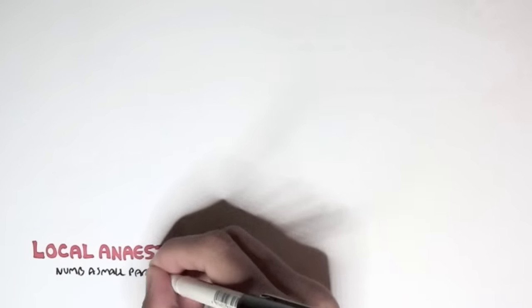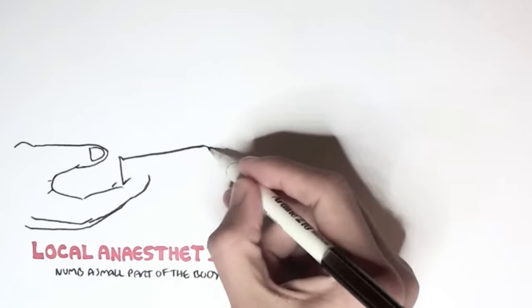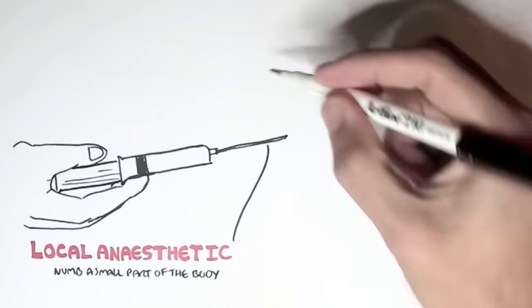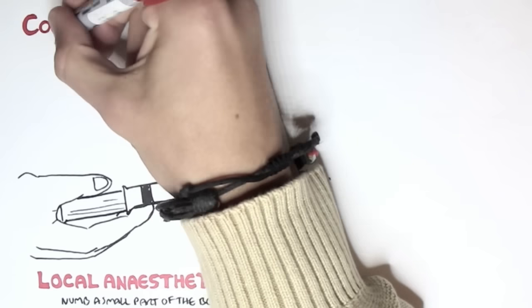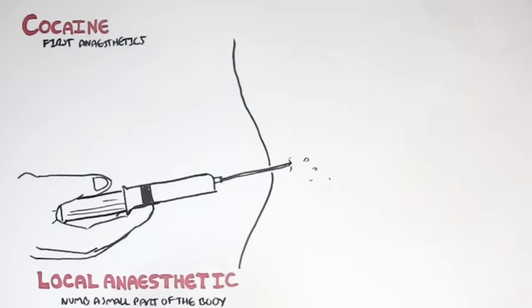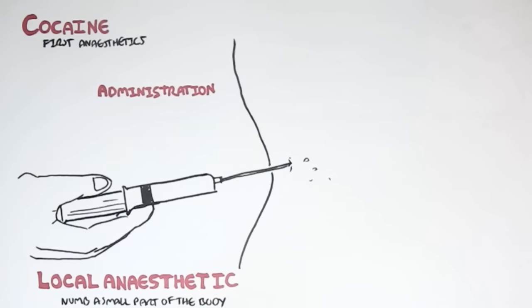Now, local anesthetics are used in minor surgery to numb a small part of the body. So here you can see some doctor injecting some local anesthetics into the body to numb the area so we can't feel anything. Interestingly enough, cocaine was one of the first anesthetics. Actually, it was the first anesthetic to be discovered.